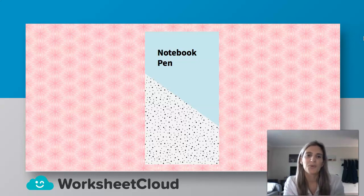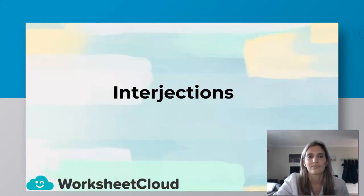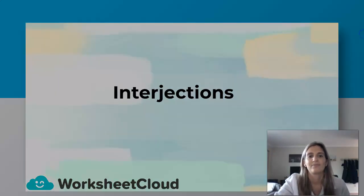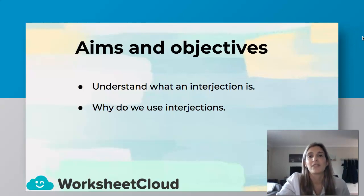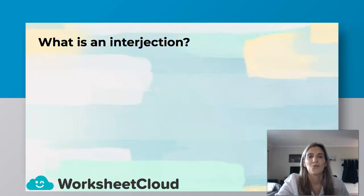Please grab a notebook and a pen, or a piece of paper if you don't have a notebook. I will tell you when you need it. Today we're going to be learning about interjections. Some of you might have done this before, and that's fine — this can be a revision lesson. Some of you might be doing this for the first time, which is great. The aims and objectives of this lesson: I would love for you to understand what an interjection is and its purpose — why do we use interjections?